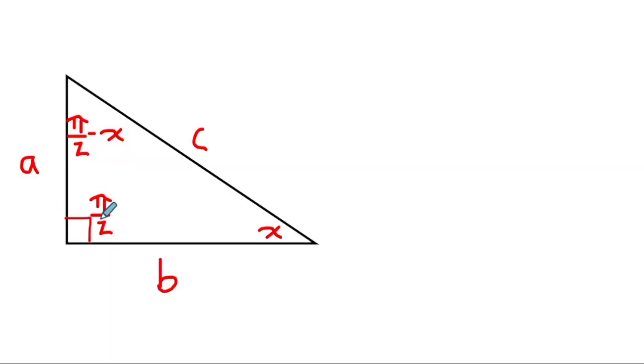In this triangle, I have a 90 degree angle, or π/2. I have some angle, and I have a third angle, which I know to be π/2 minus the other angle, based on the fact that these three angles must add up to 180 degrees, or π radians.